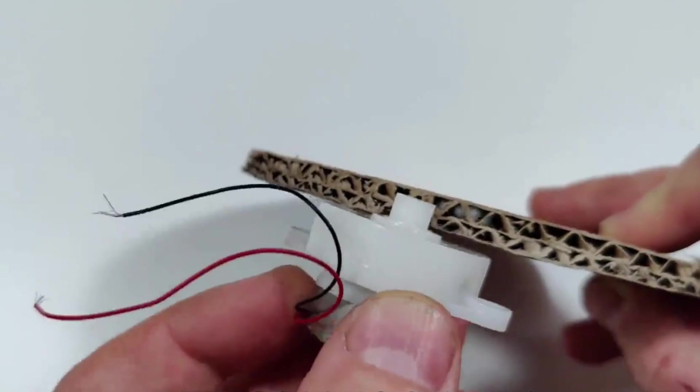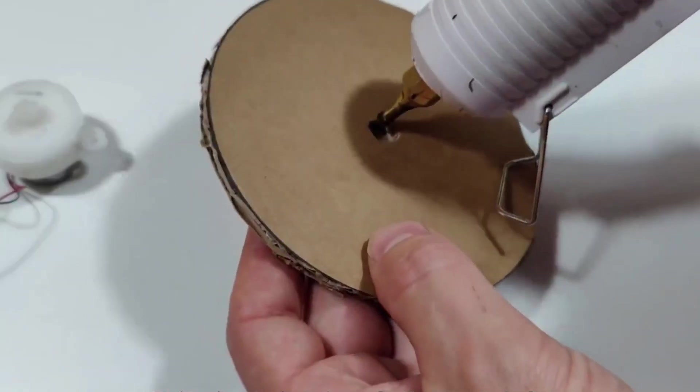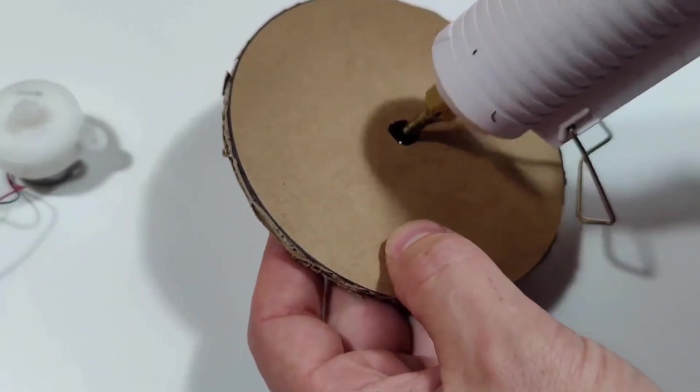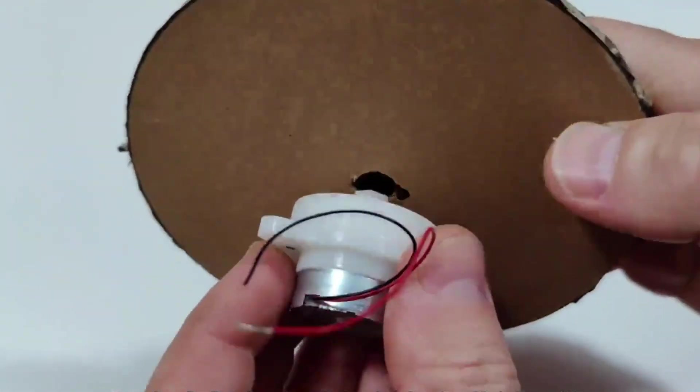Mount one motor in the center of the round base. This motor will control the left and right movement, the horizontal tracking of the sun.